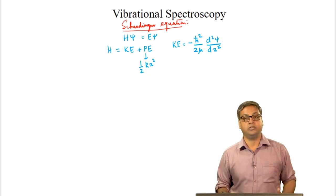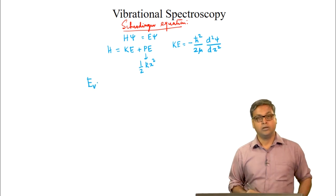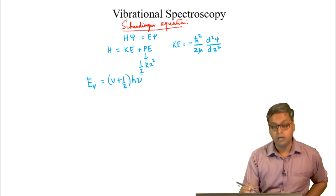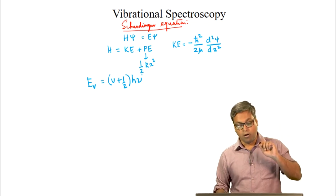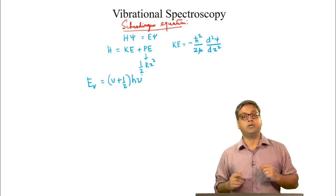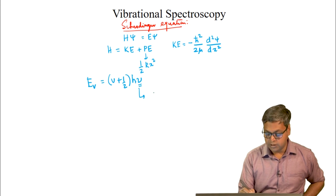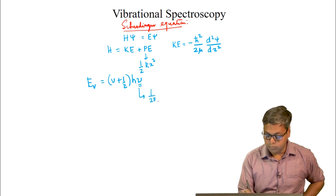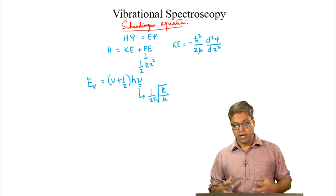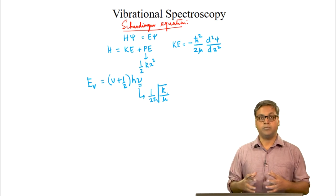The solution of the Schrödinger equation gives the energy: E_v = (v + ½)hν, where v is the vibrational quantum number and ν is the vibrational frequency. The frequency ν is given by (1/2π)√(k/μ), where k is the force constant of the bond and μ is the reduced mass of the diatomic harmonic oscillator.